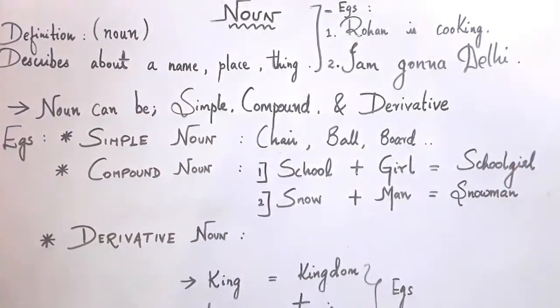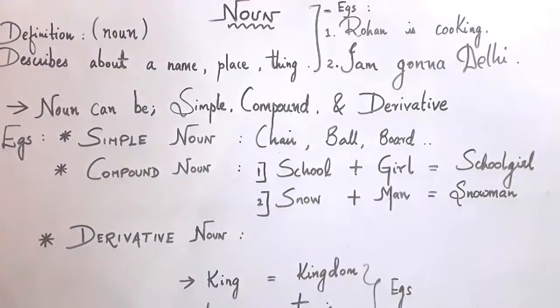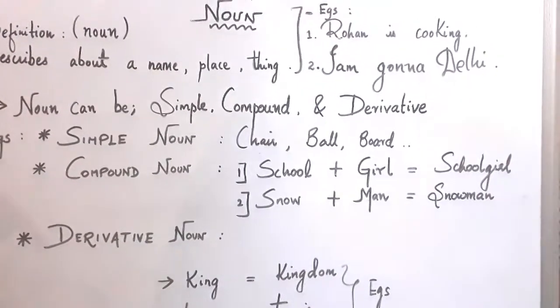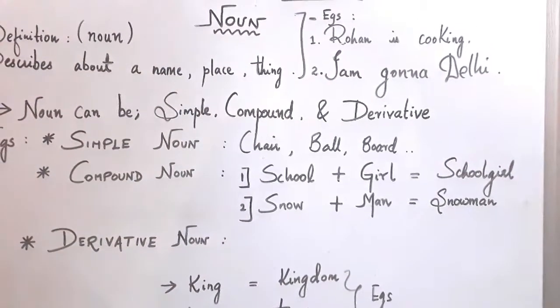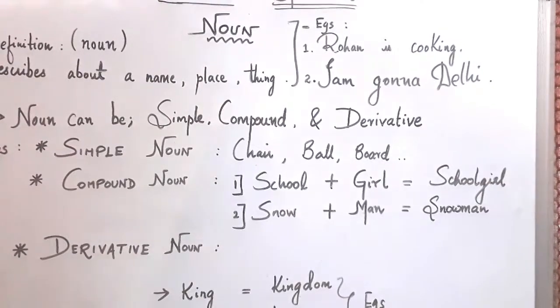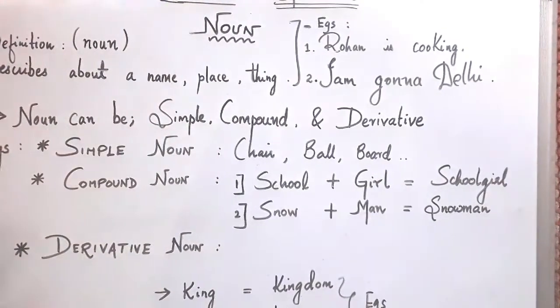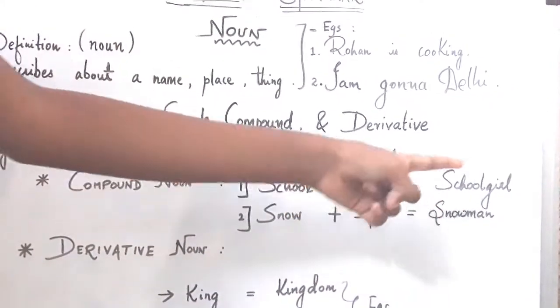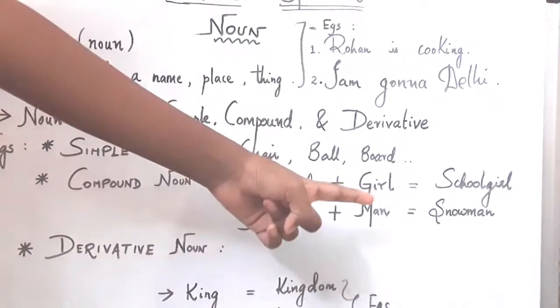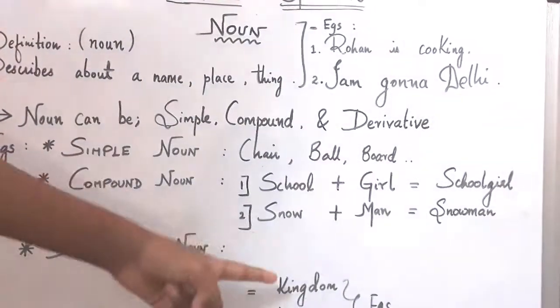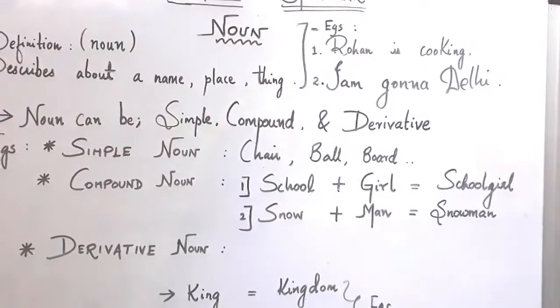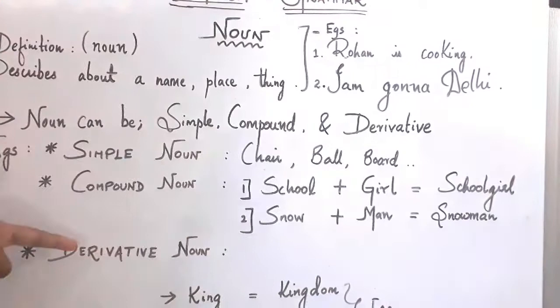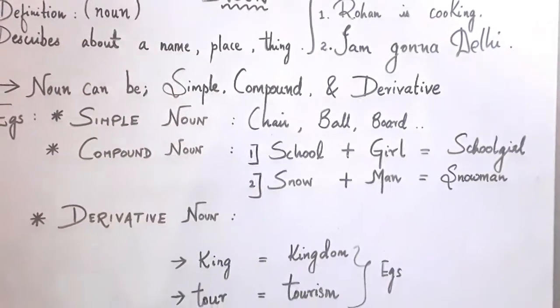Let's see what a compound noun is. A compound noun is a noun where you combine together two or more words to form a single noun that makes sense. For example, school plus girl equals schoolgirl. The second one is snow plus man, which becomes snowman. These are examples of compound nouns.